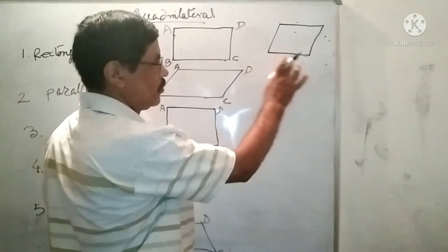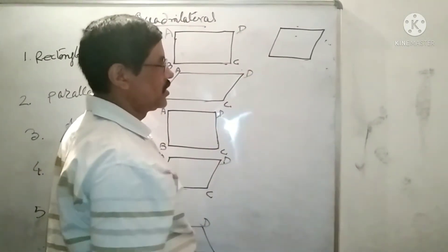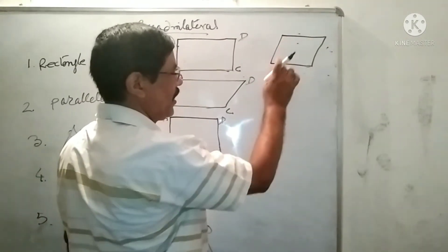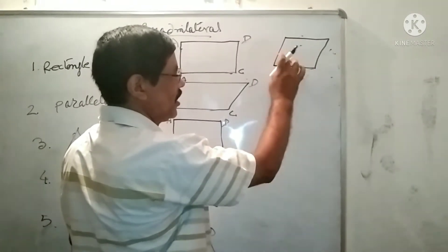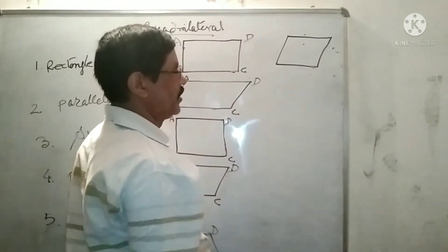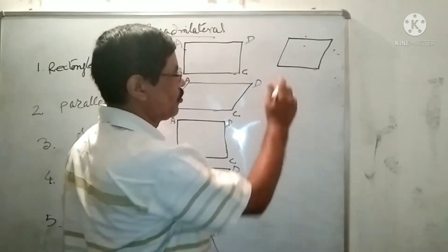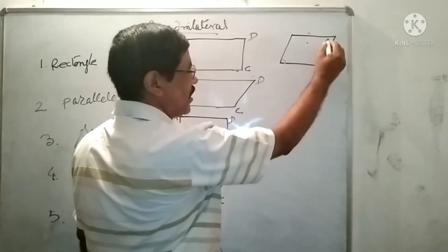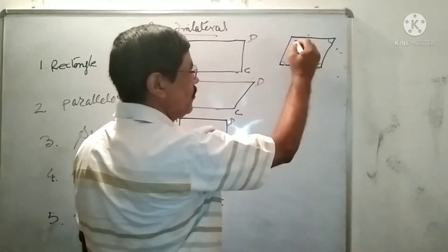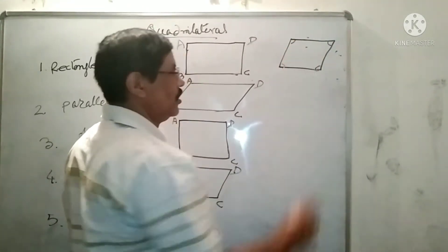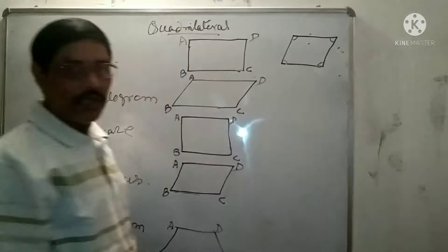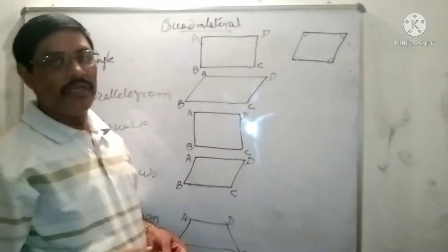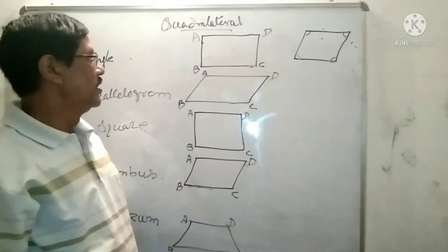First you need to know what is a quadrilateral. A geometrical figure having four sides and four corners is known as the quadrilateral. One thing to remember: the sum of the four angles of any quadrilateral is always two right angles, or 360 degrees.